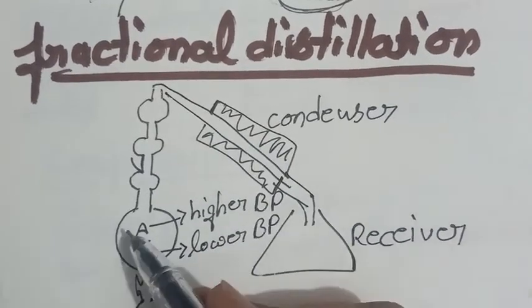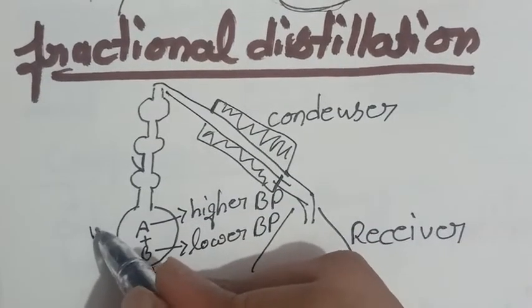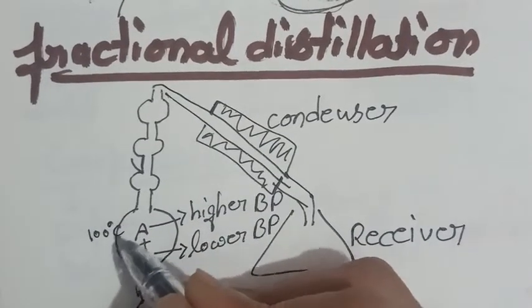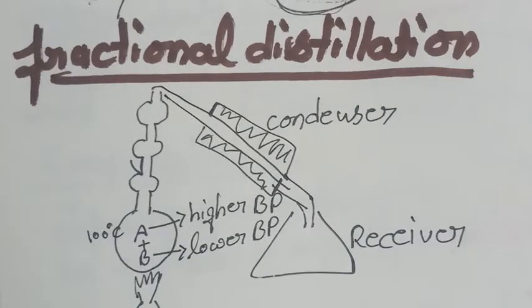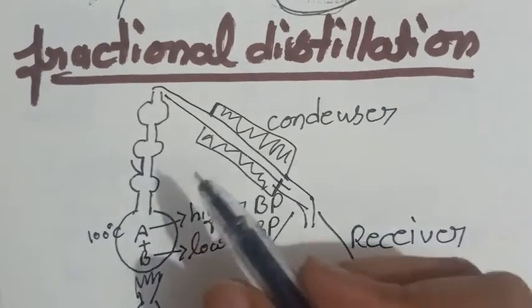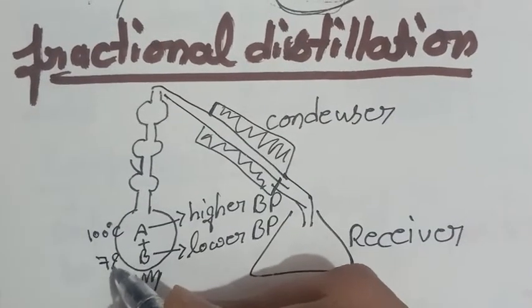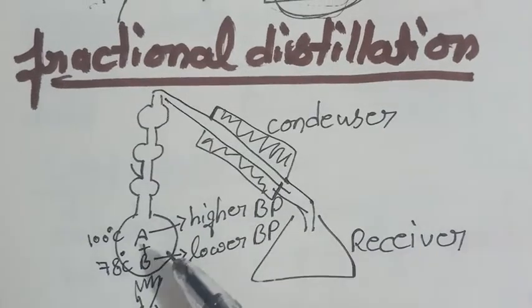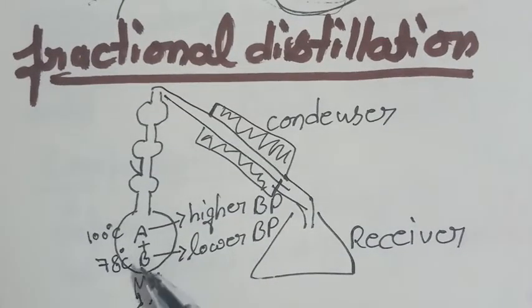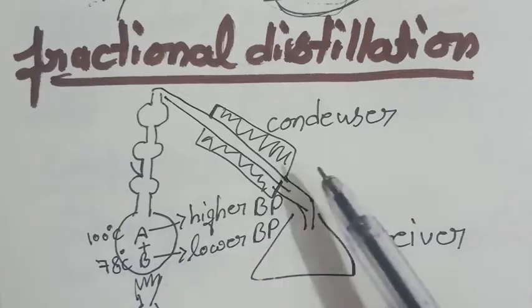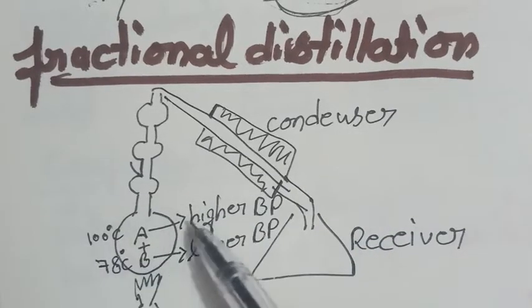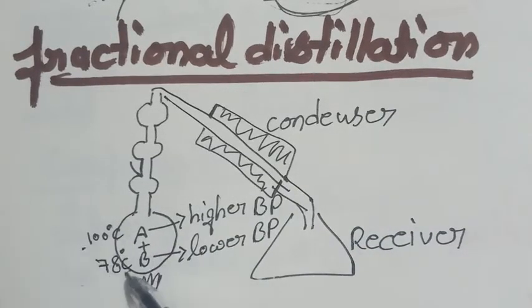For example, this one higher boiling point is having 100 degree Celsius like water. And this B, which is having lower boiling point is 78 degree Celsius means alcohol. So, alcohol plus water ko, hum separate out karte hai by this technique. They are having different boiling point.